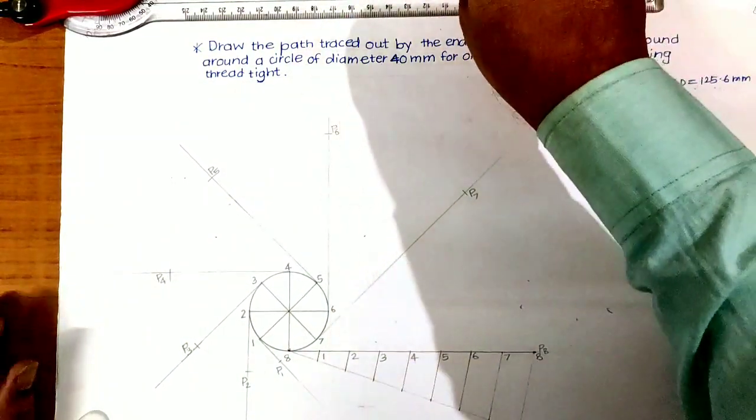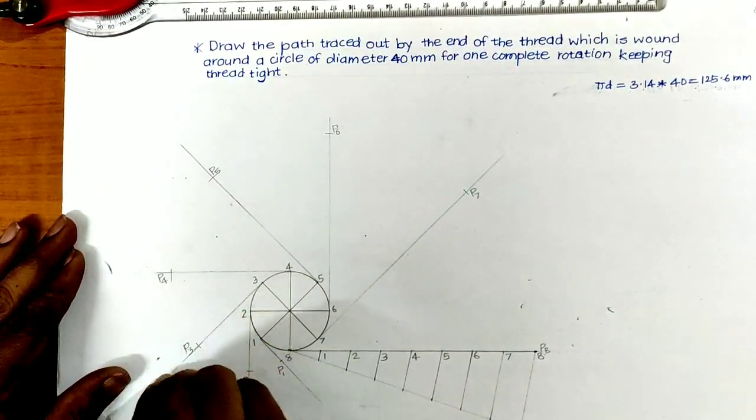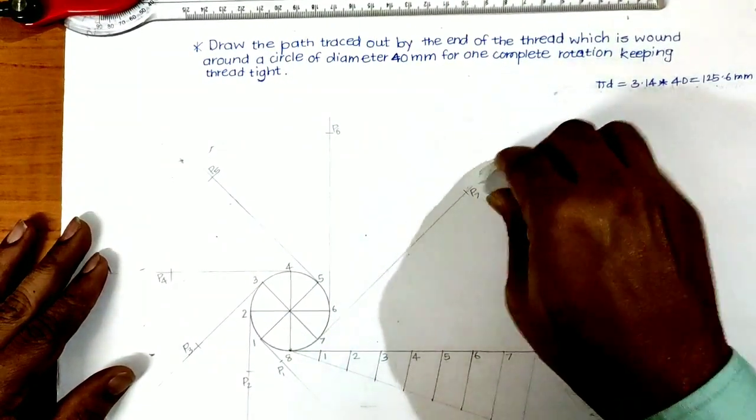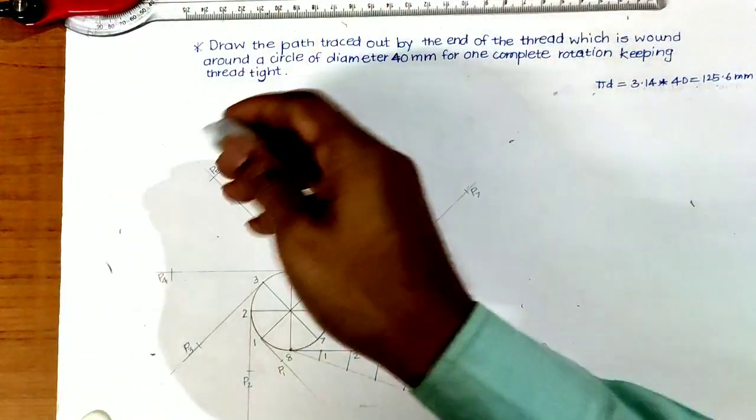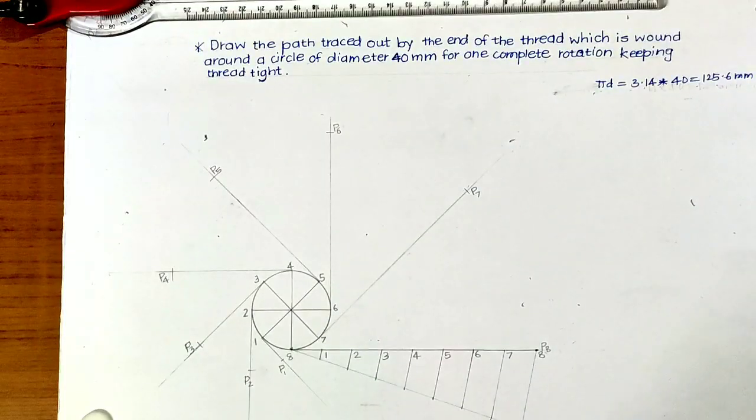Then draw a smooth curve passing through all these points. We get involute of a circle. You can use French curve or if you are comfortable you can draw a curve just by free hand.